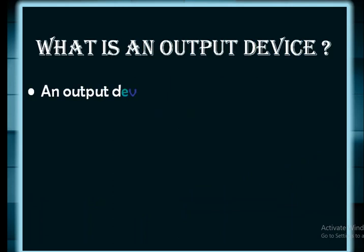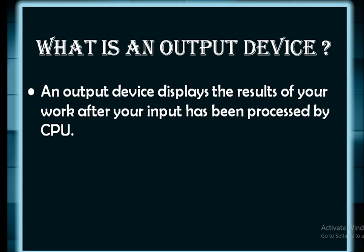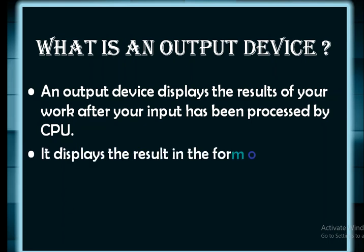An output device displays the result of your work after your input has been processed by the CPU. In the previous sessions, we learned about the IPO circuit. It takes the input with the help of input devices, processes it in the CPU, and then the CPU produces the result. That result is then displayed on the output devices.